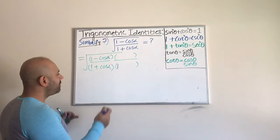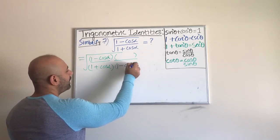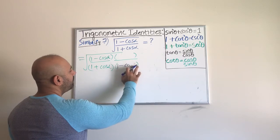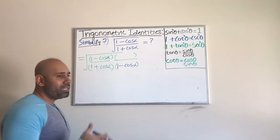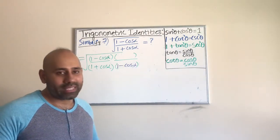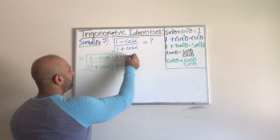If I multiply the denominator by 1 minus cosine alpha, obviously we have to multiply the numerator by the exact same quantity. So I'm going to multiply the numerator by the same quantity.